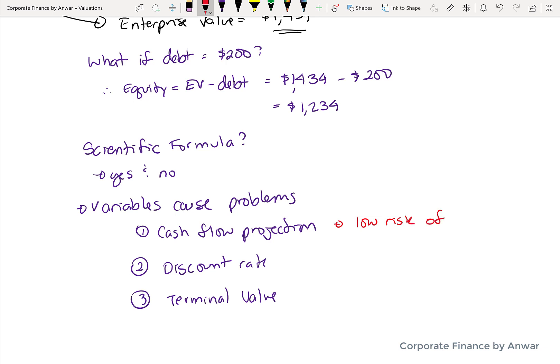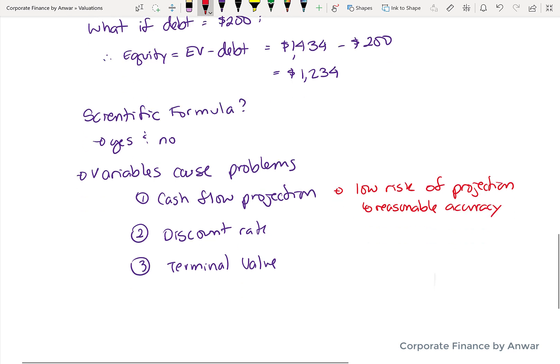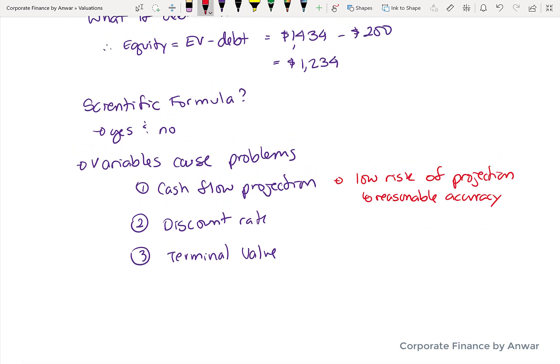So cash flow, if we rank the risk of them being wrong, cash flow projection for five years usually has a pretty low risk. If it's a mature company, you've got a good idea what the cash flow is expected to be. So you can take a guess with reasonable accuracy. It won't be deadly accurate, but it will be pretty close.